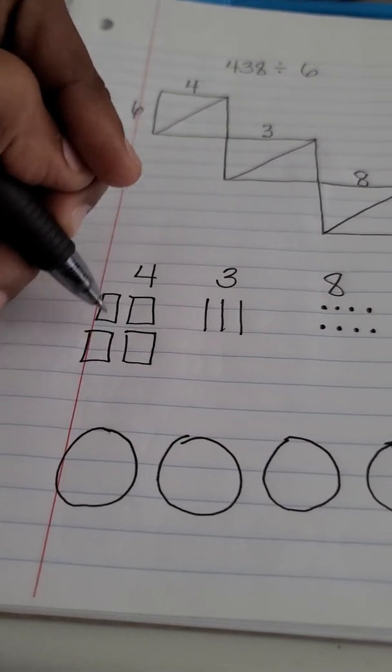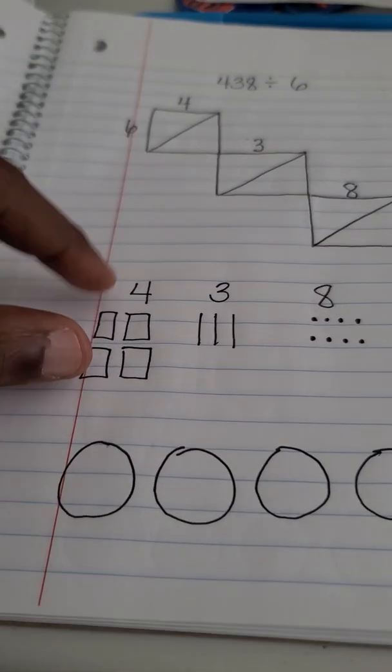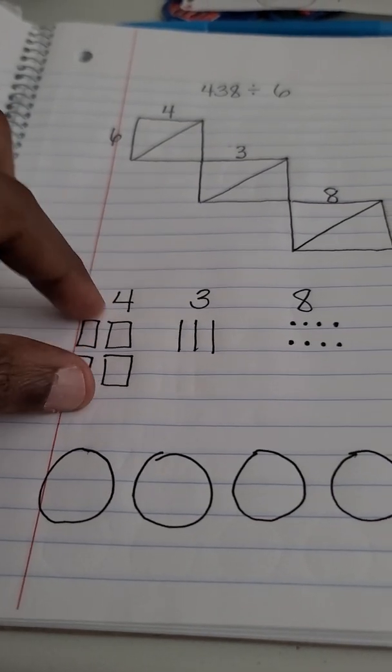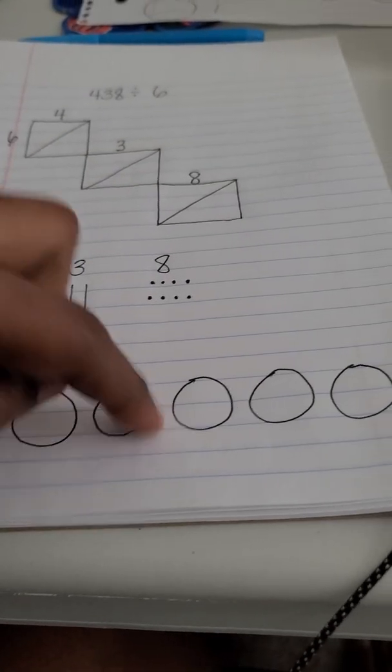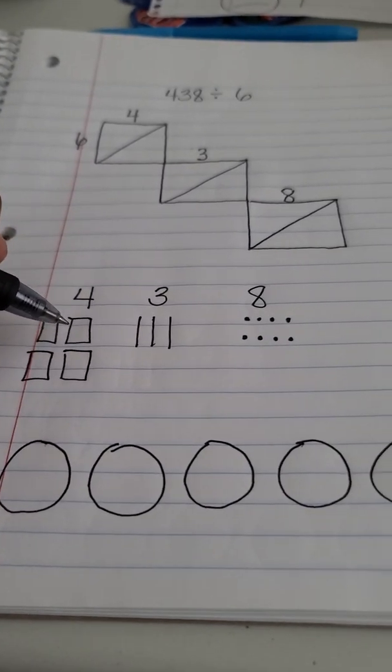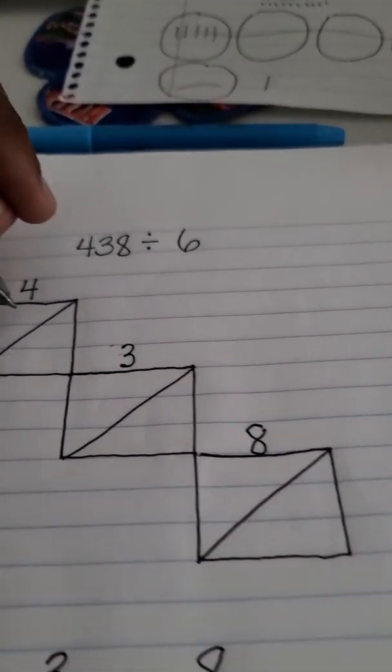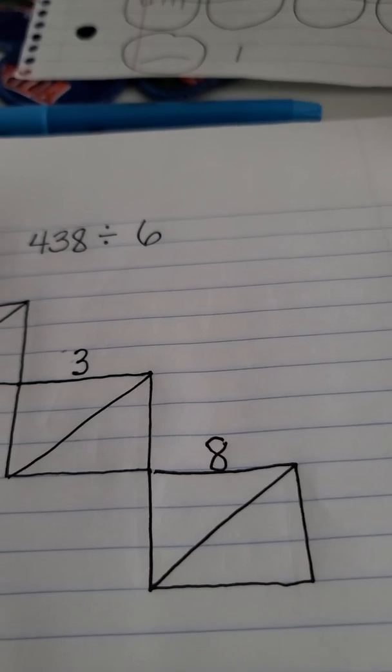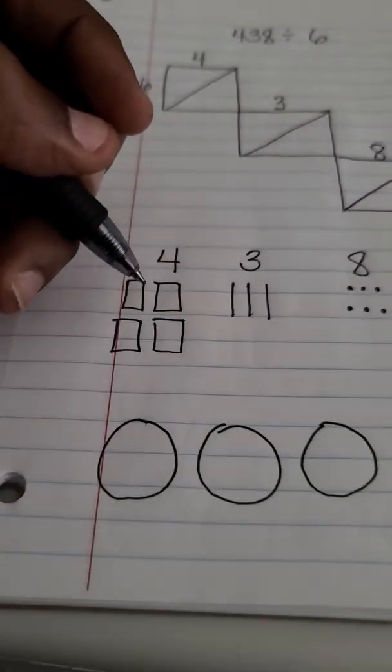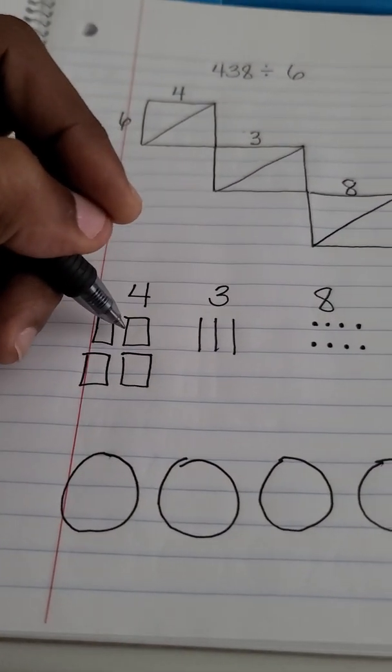First I start with the four hundreds and I ask myself: can I take these four pieces, these 400 squares, and put them into six boxes equally? Well, I can't without breaking them apart, so what I'm going to do is regroup.